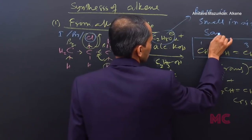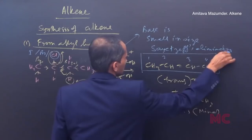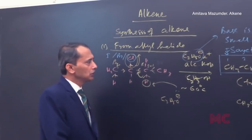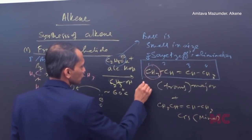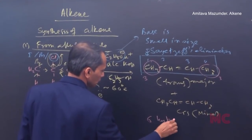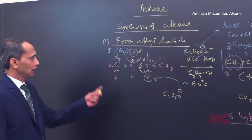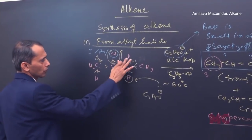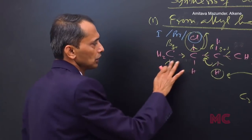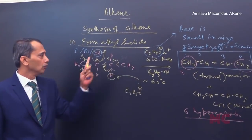This is called the Saytzeff (Zaitsev) elimination product. The Saytzeff product means the most substituted alkene — in trans-but-2-ene there are six hyperconjugation hydrogens (three on each methyl group), making it the most stable alkene. If the double bond were terminal, you would get only two hydrogens for hyperconjugation, which is less stable. So with Cl, Br, or I as leaving groups and a small base, you get the Saytzeff elimination product.